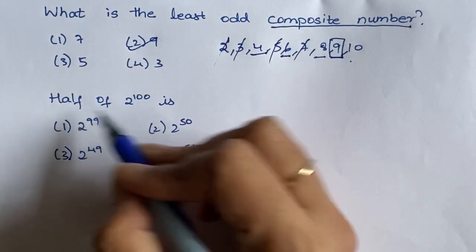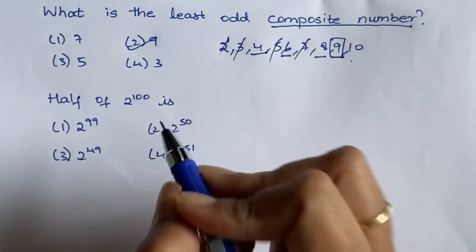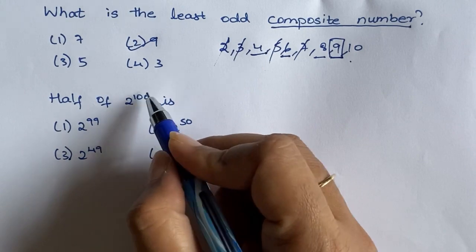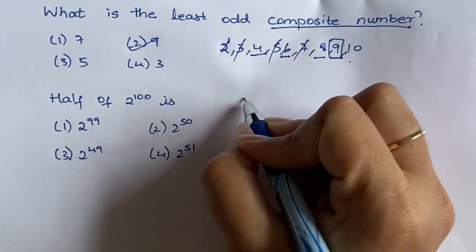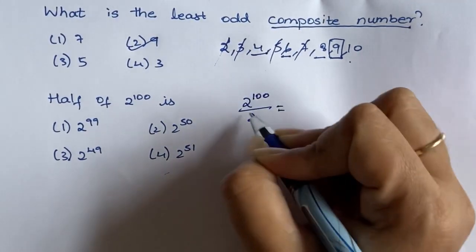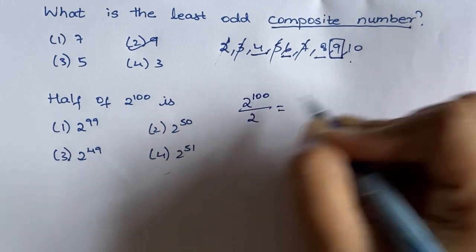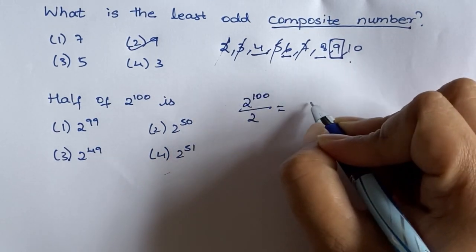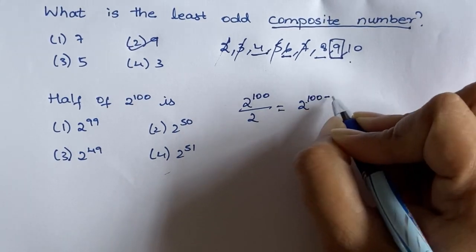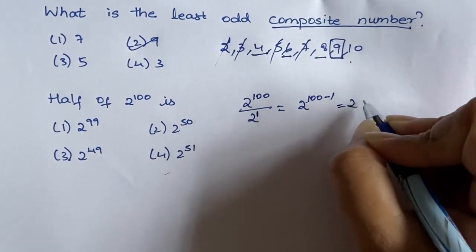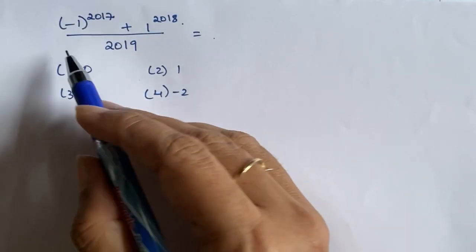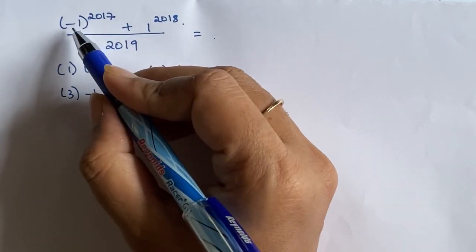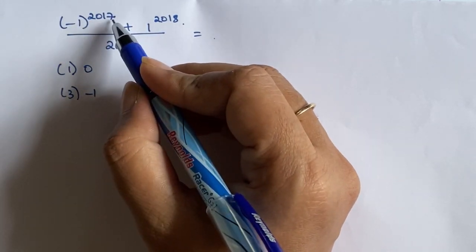Half of 2 to the power 100: that is 2 to the power 100 divided by 2, which equals 2 to the power 99. So the first option is the answer. Also, minus 1 whole to the power 2017 equals minus 1. So the answer is the first option.